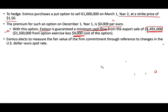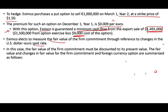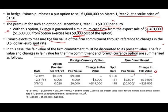The company elects to measure fair value through reference to changes in the US dollar spot rate, rather than the forward rate — and you have to document this choice as part of the hedge accounting designation. In this case, the fair value of the firm commitment must be discounted to present value. On December 1st when the commitment was made: the option premium is $0.009 per euro (fair value $9,000), and the spot rate is $1.50.